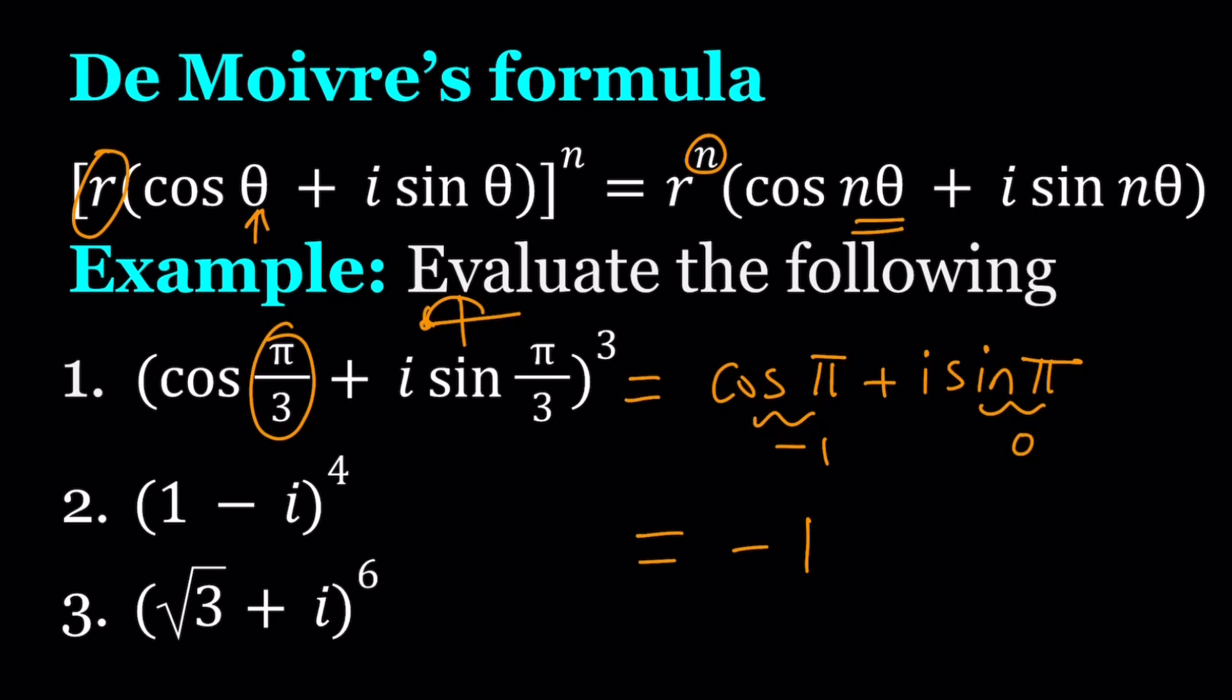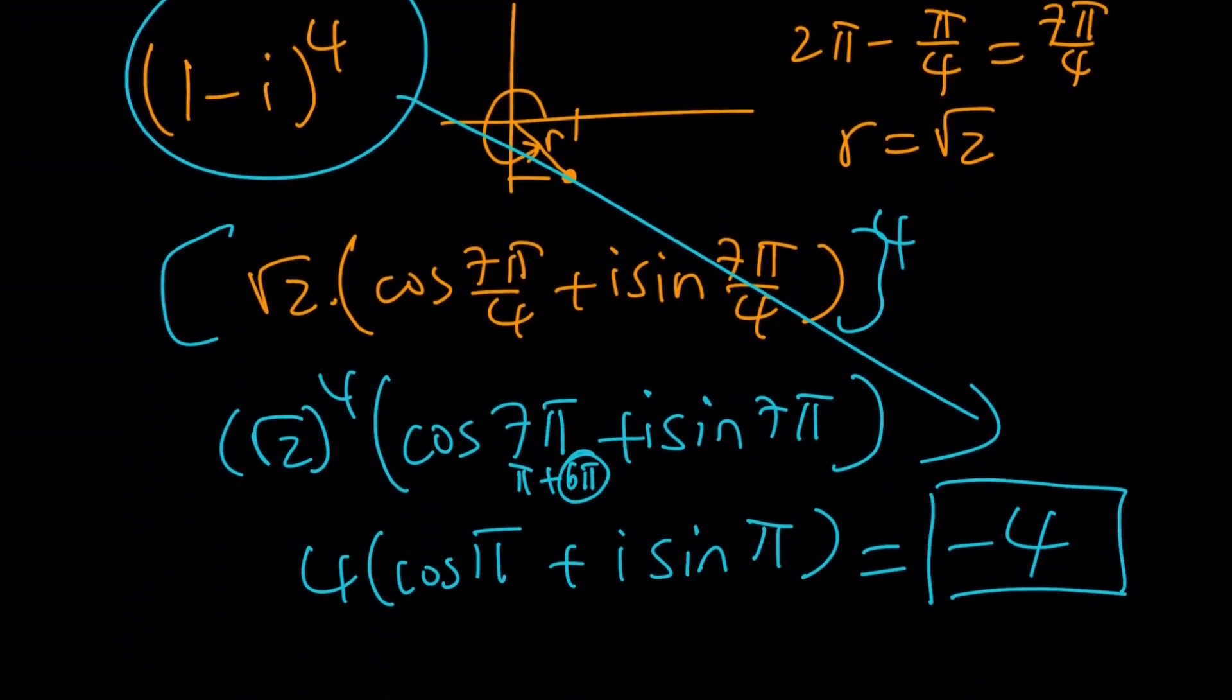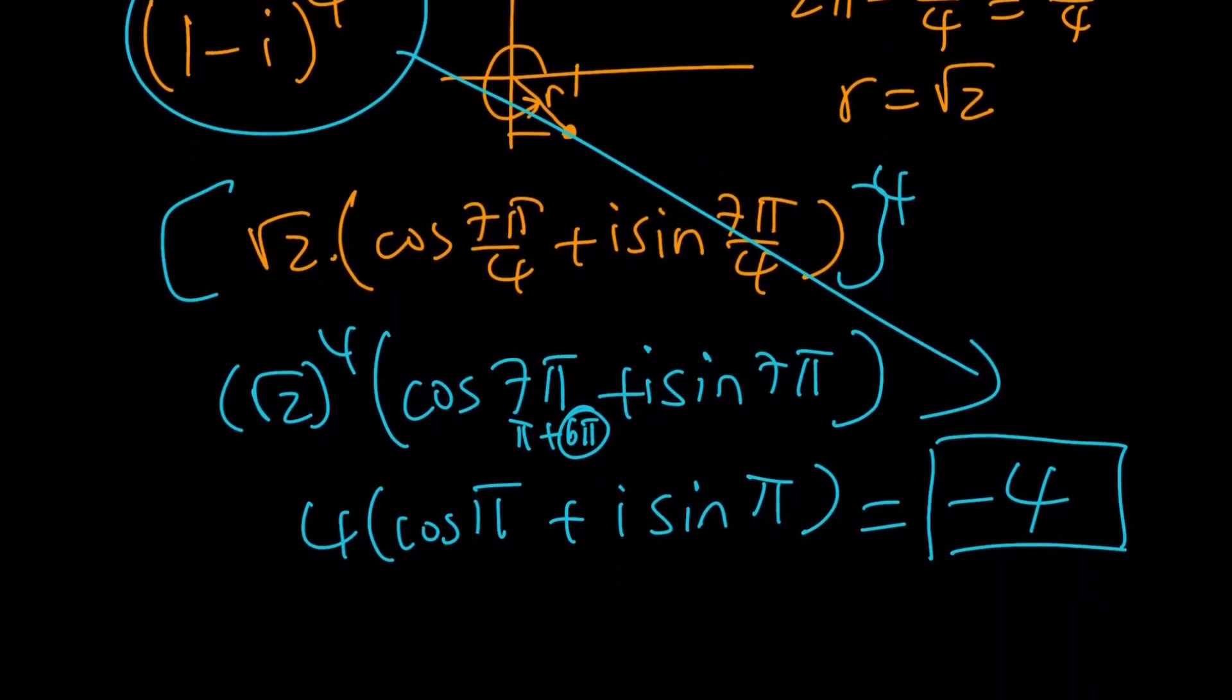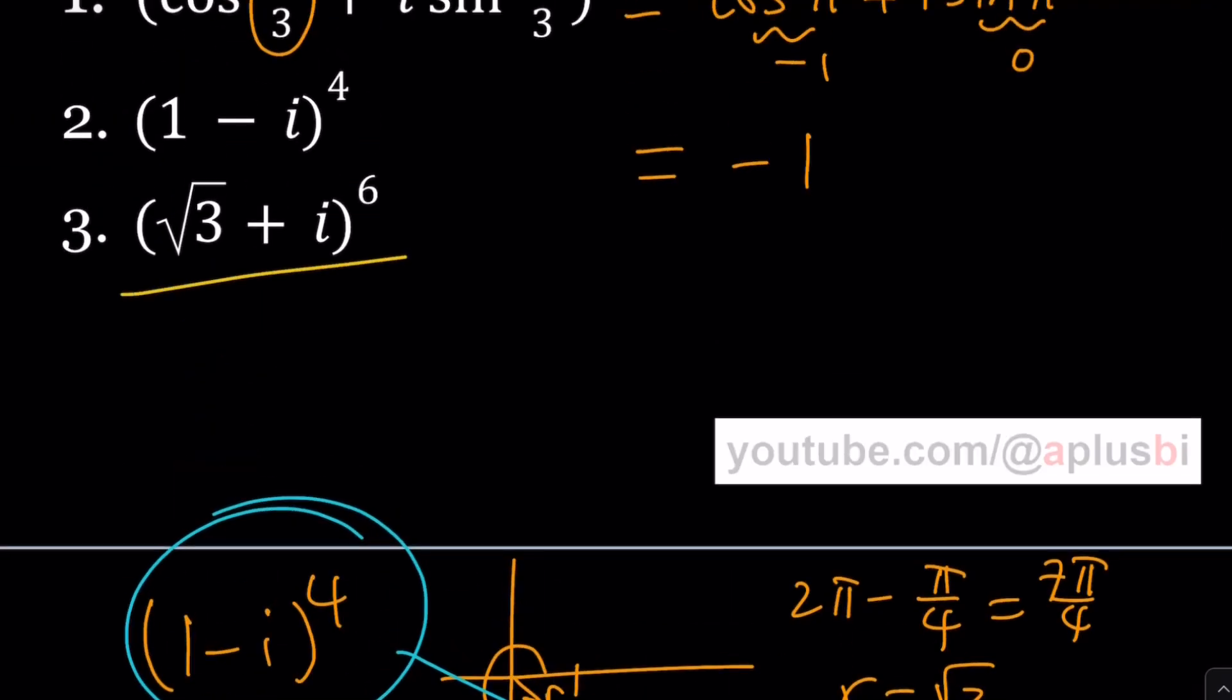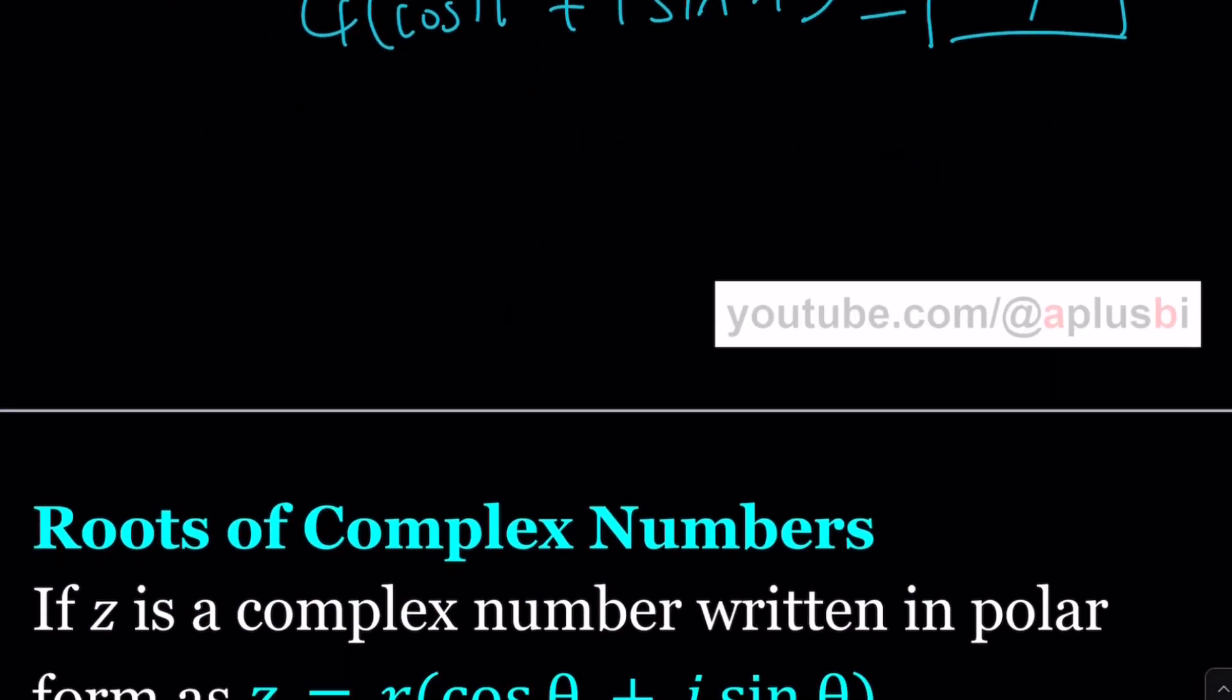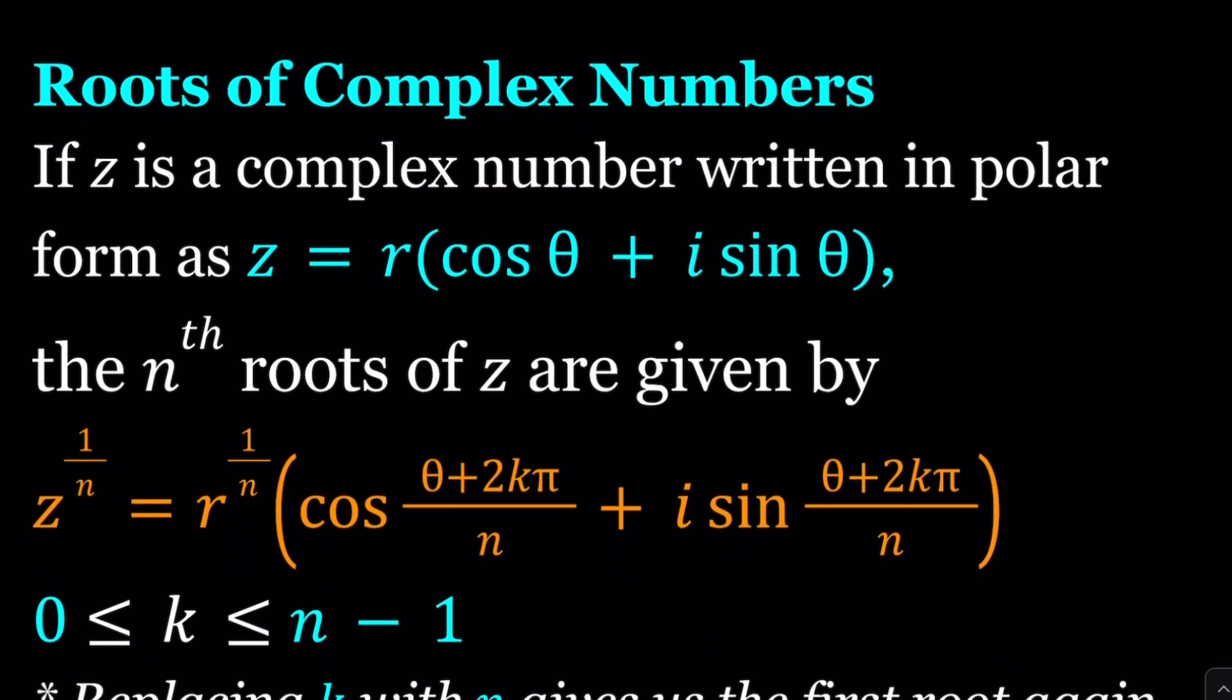Yesterday we talked about the Moivre's formula, which basically gives us the nth power of a complex number written in polar form. We did some examples. As I remember, we raised 1 minus i to the 4th power, but first we wrote it in polar form. Now we could continue with that, and you could basically do this as an exercise, and today we're going to talk about something else, and that's going to be roots of complex numbers.